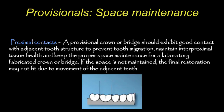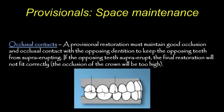Key purposes include maintaining space so there's no drifting and proximal contacts are maintained — when you place the final crown, there should be little adjustment needed. You also want to maintain occlusal contacts. If you prepare a tooth and leave it for a week or two without a provisional, the opposing tooth will drift downward, other teeth can tip, and you'll need to adjust both contacts and occlusion.